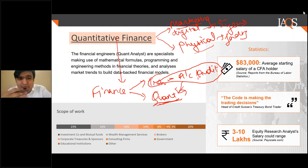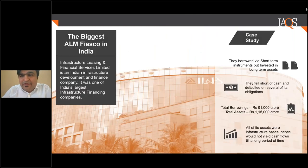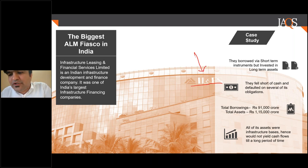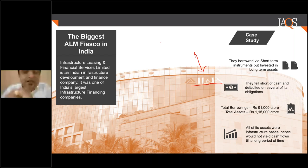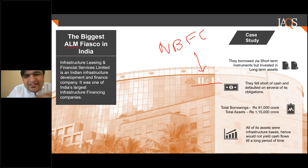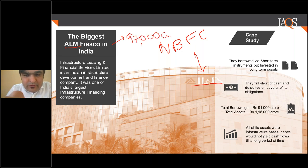A good case study here is IL&FS — Infrastructure Leasing and Financial Services, one of the oldest such companies in India. It happened in an ALM fiasco, meaning asset and liability management. IL&FS did such a big fiasco that it lost almost 97,000 crore rupees. It was not a small organization — LIC owned 25% and HDFC owned it too. It was one of the best companies.